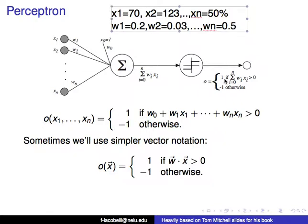There's an output function that says the result is going to be positive 1 if that sum is greater than 0, and negative 1 otherwise. As vectors, you can say there's an output function of a vector of values, where it's 1 if the dot product between the weights and the values is greater than 0, or negative 1 otherwise.